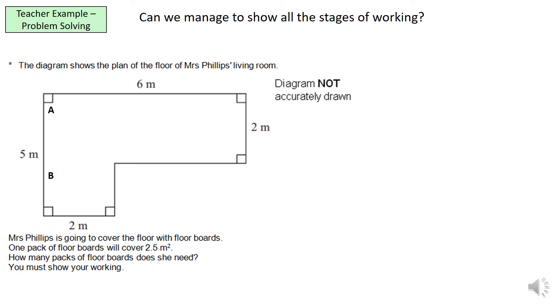So going on to the difficult part, the main part of the lesson, my example, what I want you guys to do is read the question. First of all, Mrs. Phillips is going to cover the floor with floorboards. One pack will cover 2.5 m². How many packs of floorboards does she need? So the first step, we need to work out the area of Mrs. Phillips' living room. And in order to do that, I've split the shape in two and I've called them A and B. So I've created two shapes within it. And we know that the area of shape A is 6 times 2, which is 12 meters squared. Now for B, what we need to understand is that it is 3 meters, not 5 times 2, it's 3 times 2, because we only need that little section where the split has been done. And if we add those two together, 12 plus 6, that will give us 18 meters squared. That is the total area of Mrs. Phillips' living room.